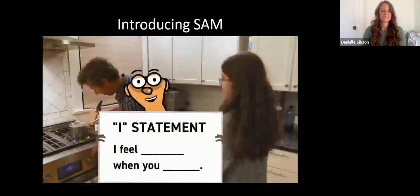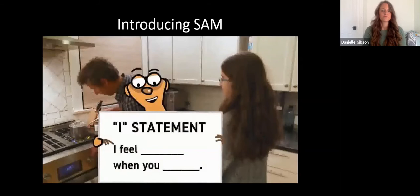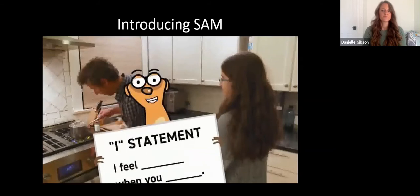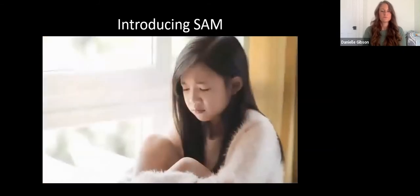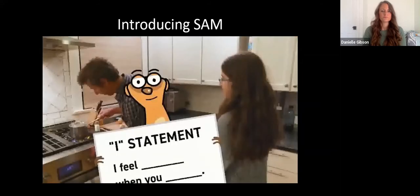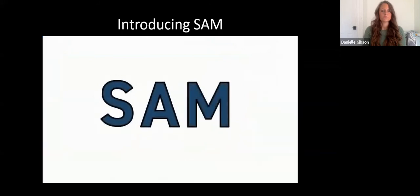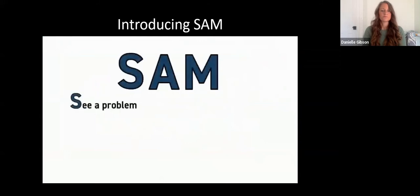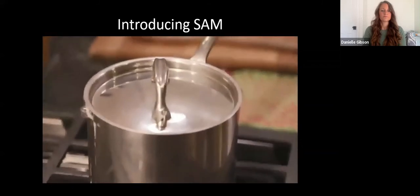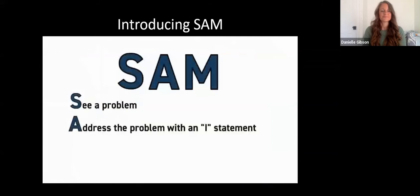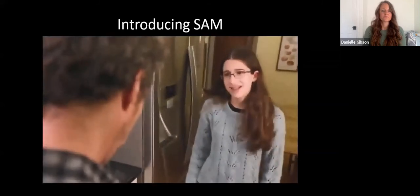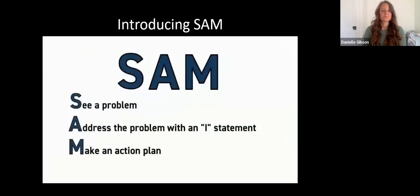When you use the word I, you say how you feel. It tells the person what's happening that makes you feel that way. It can be hard to speak up sometimes, especially when someone is doing something that makes you feel uncomfortable. Whether you're worried, or scared, or angry, or sad, or confused. And it can be hard to remember the best words to use. So, here's something to help you remember what to do. You can use SAM. That's S-A-M. Like me. S stands for see a problem. The problem here is that Dad is looking at his phone instead of paying attention to what's on the stove. A is for address the problem using an I statement. This is where you say something about the distraction. Hey Dad, I'm worried that if you don't pay attention, you're going to ruin my dinner. Finally, M for make an action plan together. Notice I said together. You and the other person can work out a solution. Otherwise, you're just ordering people around.